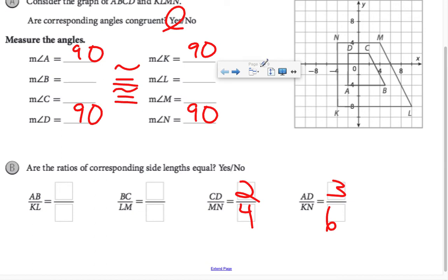I'm not going to worry about BC and LM, but I am going to look at AB, whose length is 3.5, and KL, which is 7. Are the ratios of the corresponding side lengths equal? Yes.